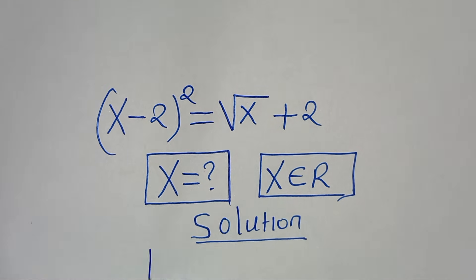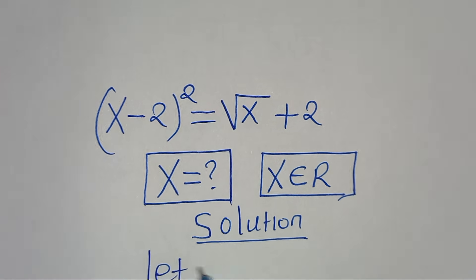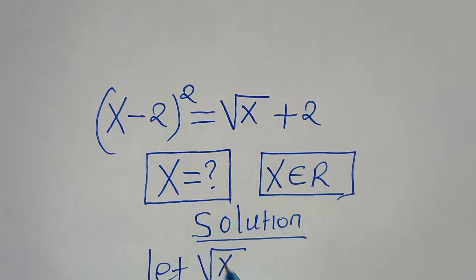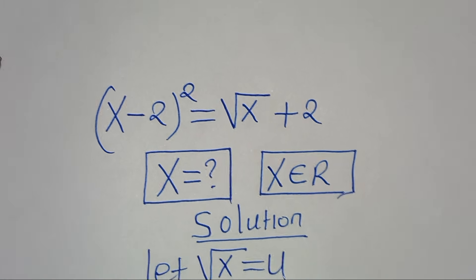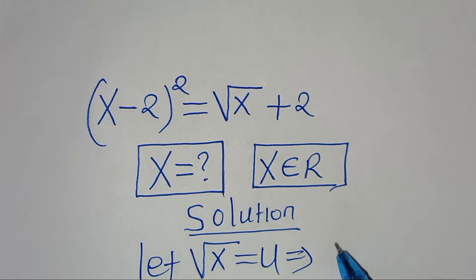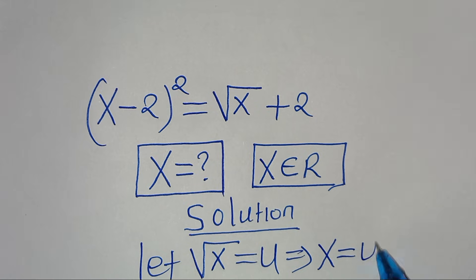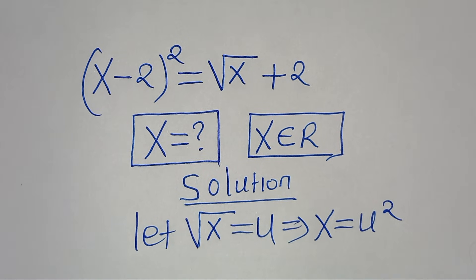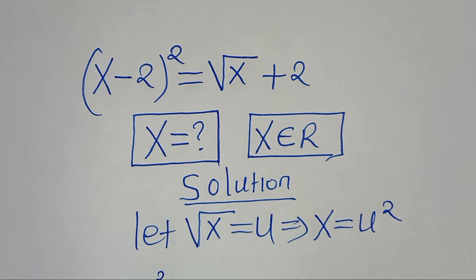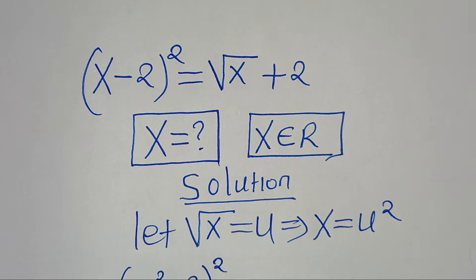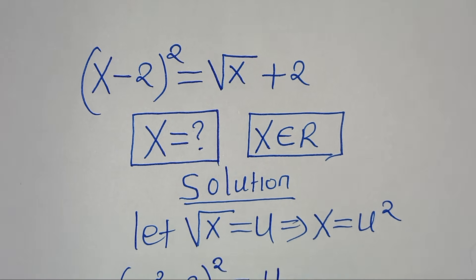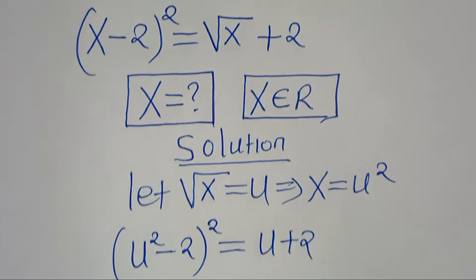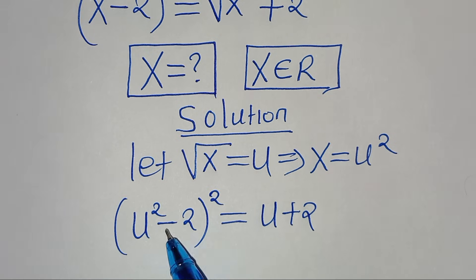The first step: we can let the square root of x be equal to u. So this means that x is the same thing as u squared. Substituting u back into the equation, then we have (u squared minus 2) to the power of 2, this is equal to u plus 2.